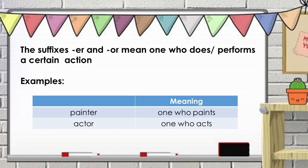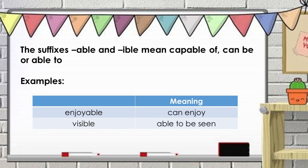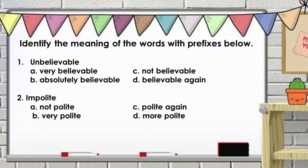The suffixes er and or mean one who does or performs a certain action. Examples: painter, one who paints; actor, one who acts. And lastly, the suffixes able and ible mean capable of, or can be, or able to. Examples: enjoyable, meaning can enjoy; visible, meaning able to be seen.